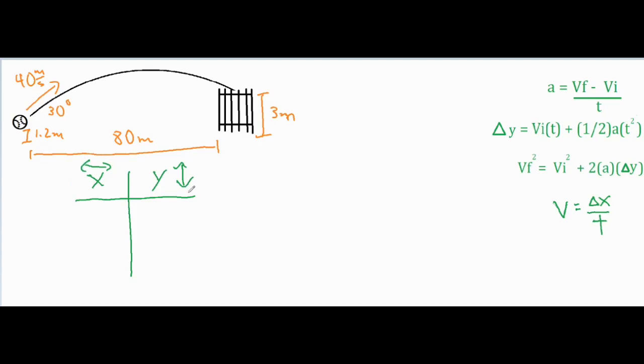In the vertical direction there is the force of gravity, so that is going to cause the ball to be in accelerated motion in the vertical direction. Therefore, we're only going to use the top three formulas for our Y column and the bottom formula for the X column. We're going to pull our 40 meter per second velocity and break it up into its X component and its Y component.